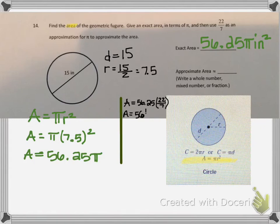I'm going to rewrite 56.25 as a mixed number, since I have to multiply by the fraction 22 sevenths. I was also told to write my answer as a whole number, mixed number, or fraction. So I cannot leave my answer as a decimal.